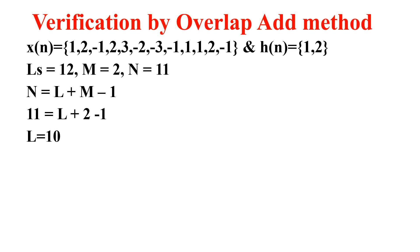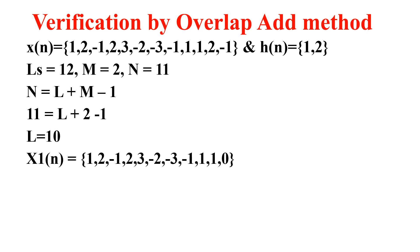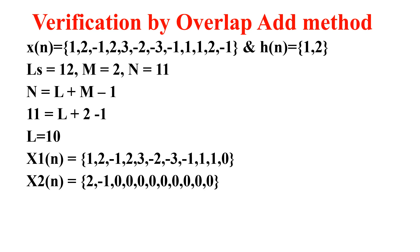I take 10 elements and append 1 zero to get the first input block x1(n) of length 11. For x2(n), the remaining samples are {2, -1} from x(n), and I append 9 zeros to make it length 11. So I have divided x(n) into two blocks: x1(n) and x2(n).